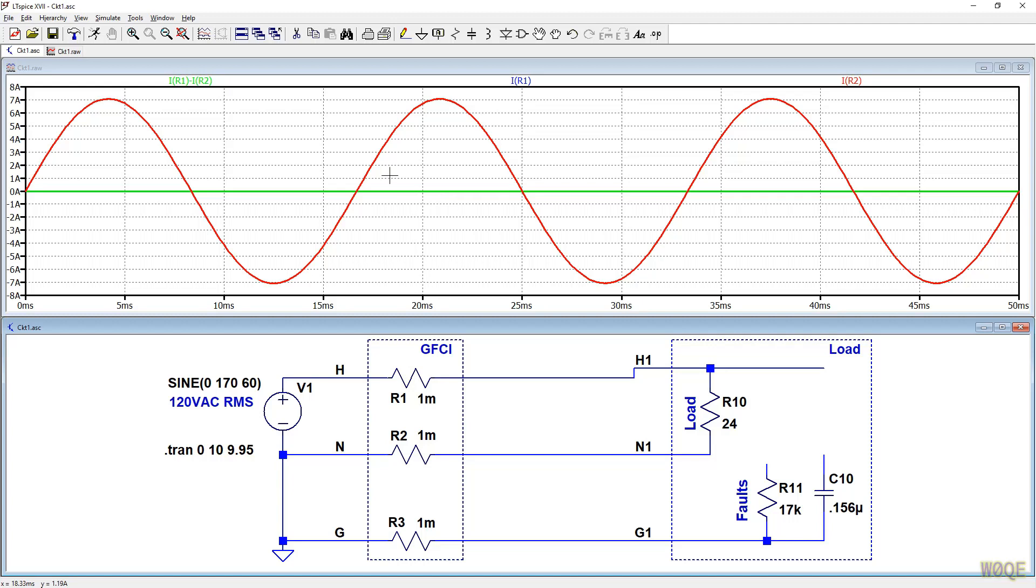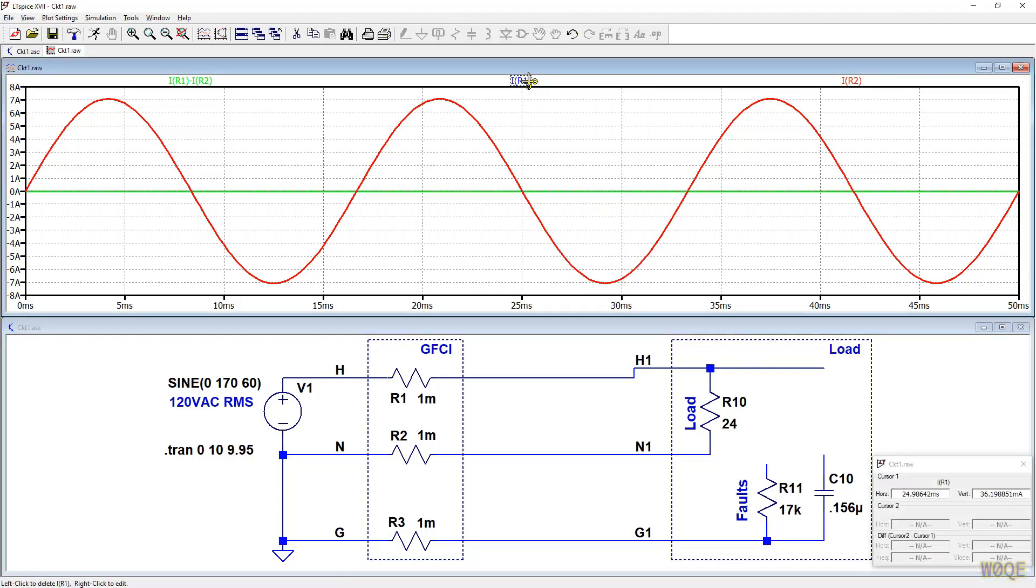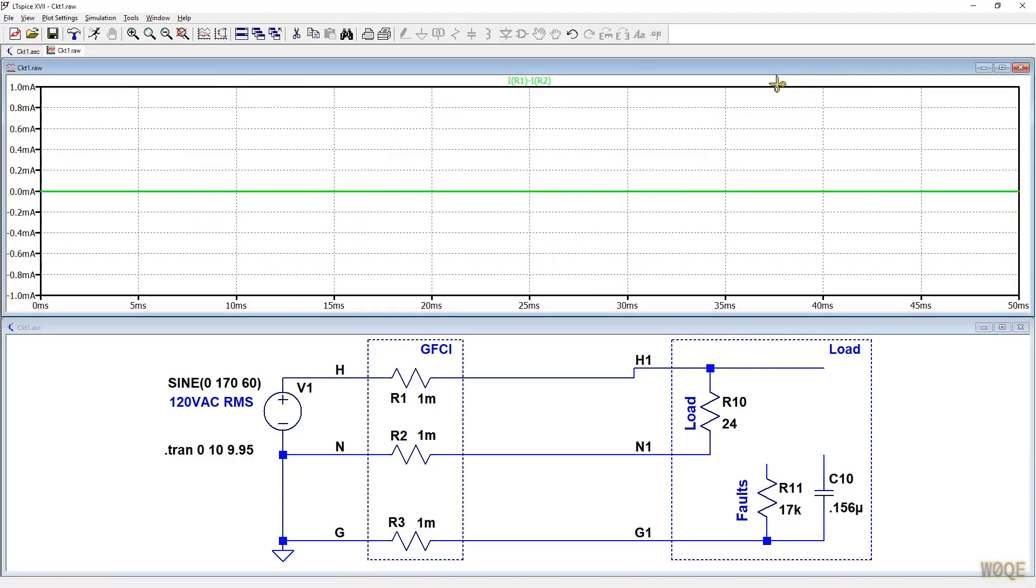What a ground fault interrupter does here is it looks for a current imbalance of about 4, 5, 6 milliamps, something like that. And if it sees that it opens up the circuit indicating that there might be a fault, a leakage fault to ground somewhere.